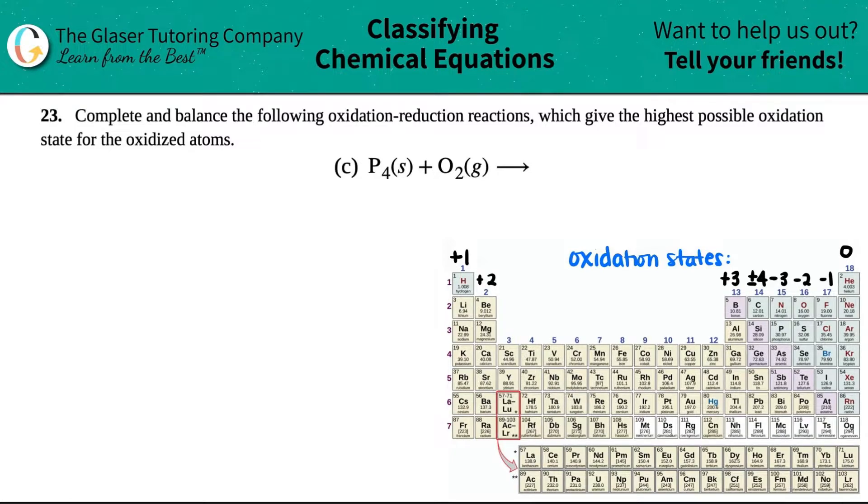Number 23, complete and balance the following oxidation reduction reactions, which give the highest possible oxidation state for the oxidized atoms. And then we have letter C out of the bunch.